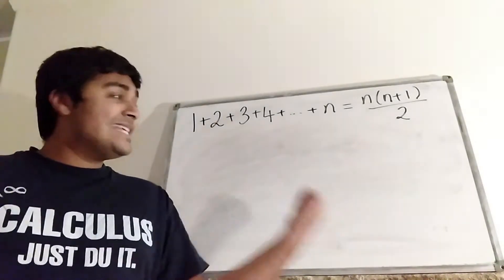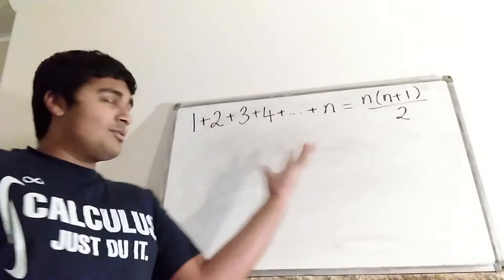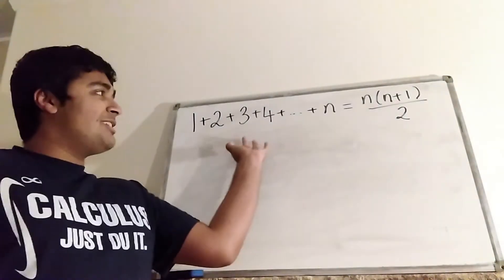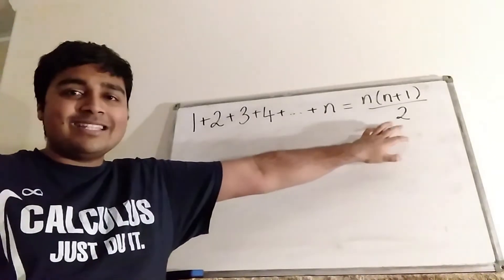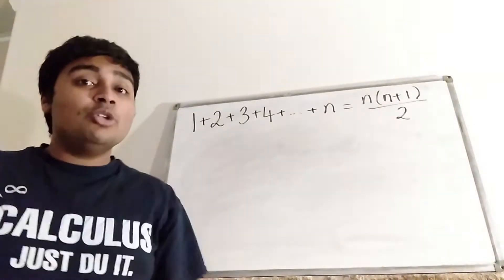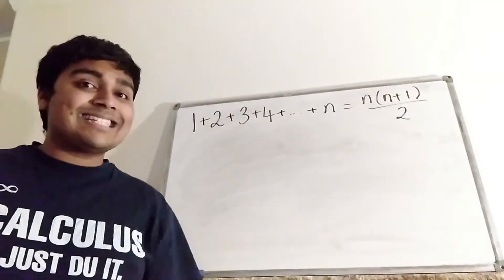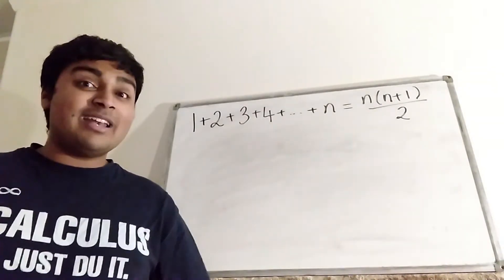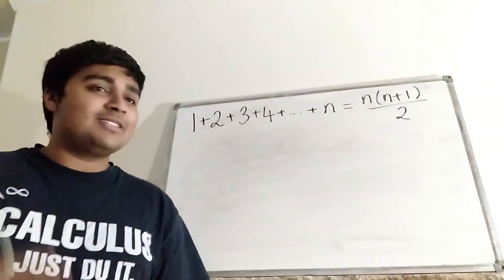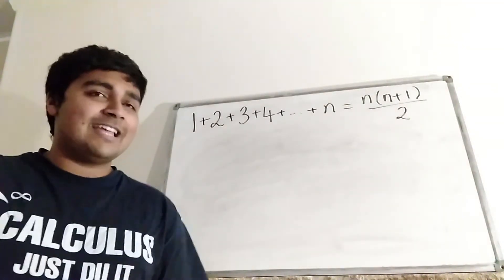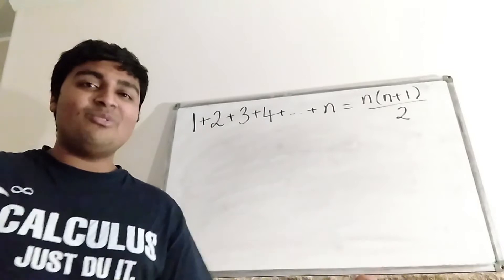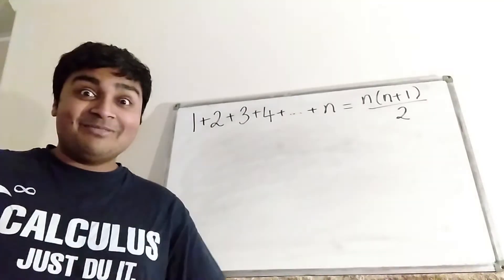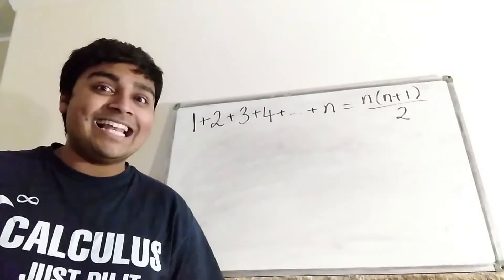The procedure I use to evaluate this sum and show that it equals this formula — you can use that exact same procedure to work out the sum of the first n square numbers, the sum of the first n cube numbers, the sum of the first n powers of 4, and so on. Okay, so without further ado, let's get stuck in.